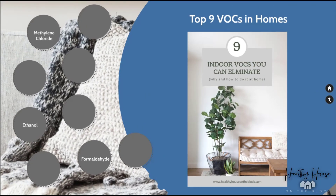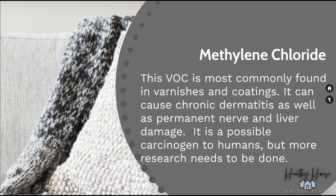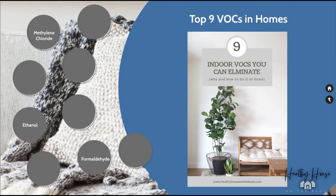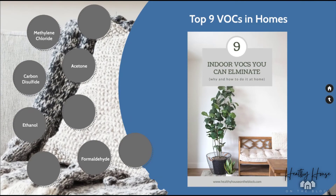Methylene chloride is found in many varnishes and coatings. It can cause chronic dermatitis, permanent nerve and liver damage, and is a possible carcinogen to humans, though more research is needed. Next is acetone, seen commonly in beauty products — most notably as a nail polish remover. It is used to reduce the viscosity of solutions and blend a variety of solutions together. Acetone can cause issues with the blood as well as damage to the kidneys, liver, and nerves.